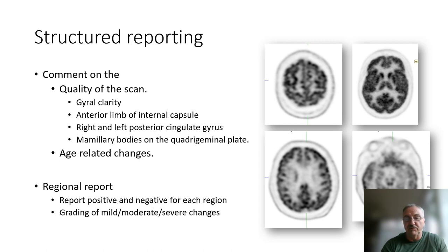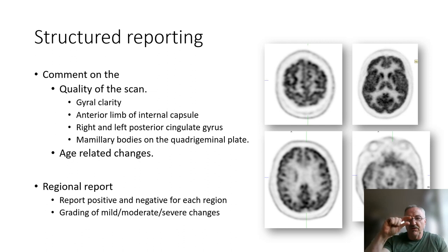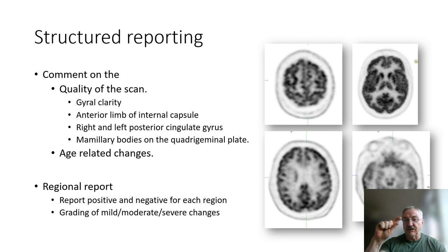The prior display techniques will help with the elderly population, but changes can be more subtle. We're then going to give a regional report on whether there are positive and negative changes, and grade them as mild, moderate, and severe within these lobar regions. Mild is where we see reduced activity but still see continuous activity in the gray matter — we can see holes in the sulcal pattern but can still see the sulcal pattern. Severe changes are where it's very difficult to see any gray-white matter differentiation.